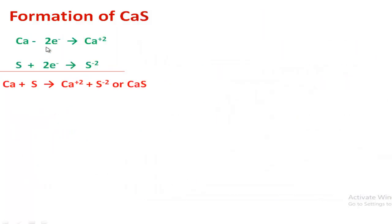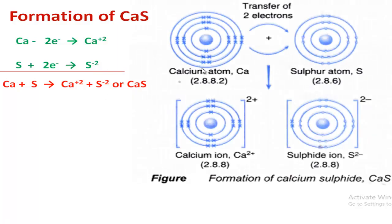Now follow another example: formation of calcium sulfide. Calcium's electronic configuration is 2-8-8-2, meaning its outermost shell contains two electrons, so it releases two electrons and is converted into calcium di-positive ion — a cation. Sulfur's electronic configuration is 2-8-6, so it easily accepts two electrons and is converted into sulfide ion. In this way they form calcium sulfide, an ionic compound.